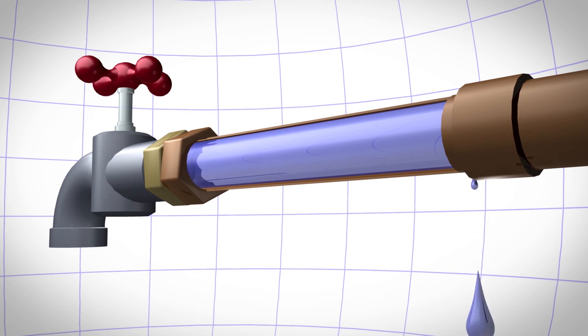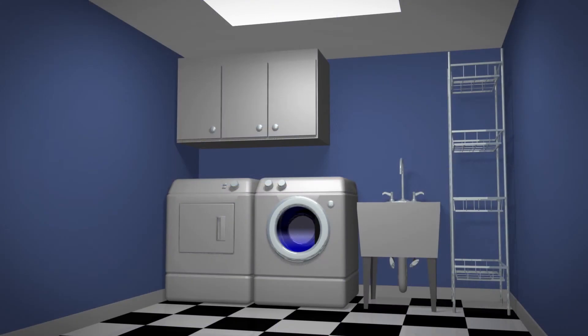Water hammer can be hard on pipes, weakening the connections and causing leaks. Water hammer can also be hard on your water heater, washing machine, and other appliances.